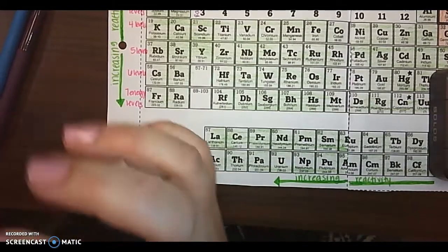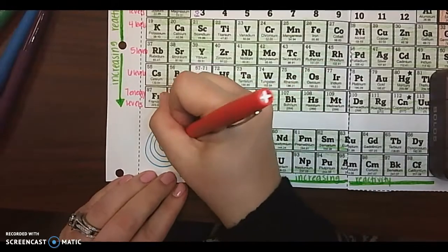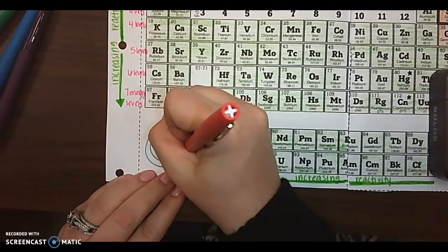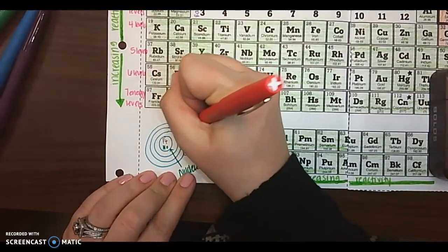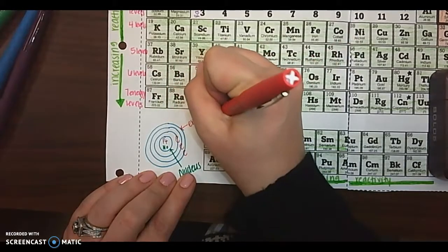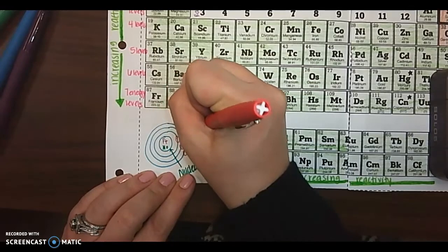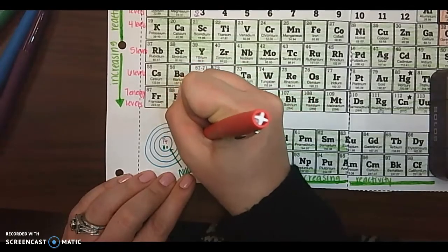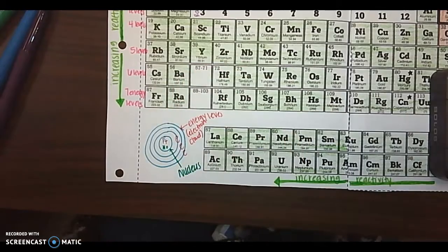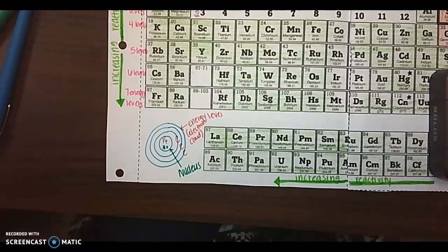Then we have electrons in these energy levels in the electron cloud. So label your atom like this.